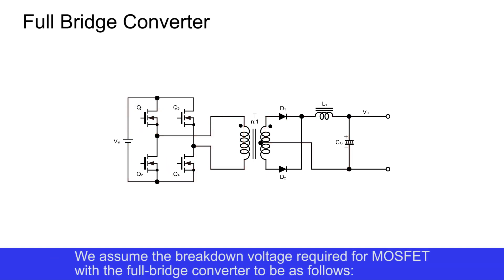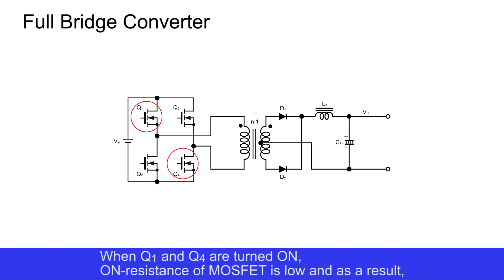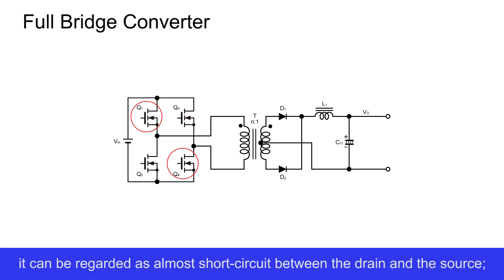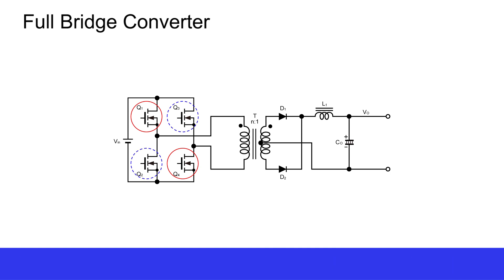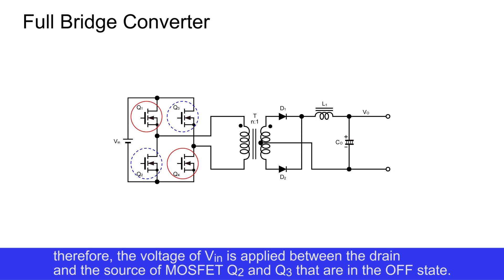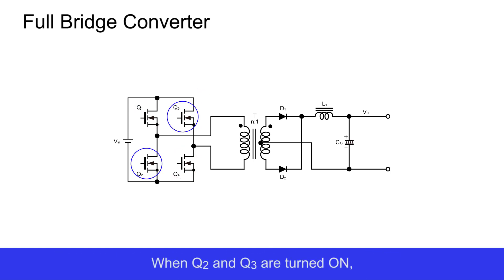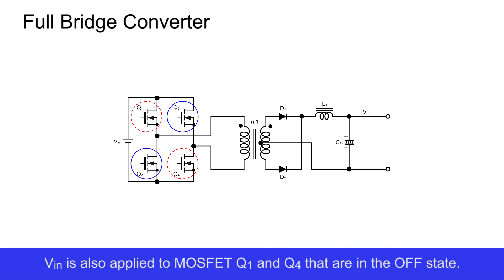We assume the breakdown voltage required for MOSFETs in the full bridge converter as follows. When Q1 and Q4 are turned on, the on-resistance of the MOSFET is low, and as a result it can be regarded as almost a short circuit between drain and source. Therefore, the voltage VIN is applied between the drain and source of MOSFETs Q2 and Q3 that are in the off state. When Q2 and Q3 are turned on, VIN is also applied to MOSFETs Q1 and Q4 that are in the off state.